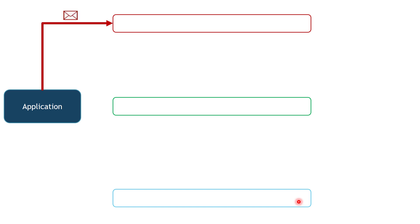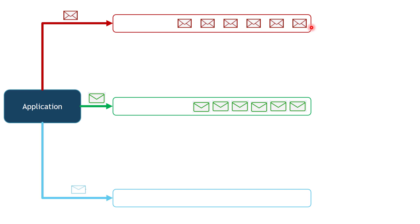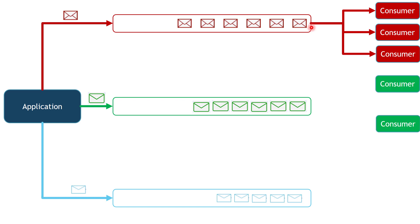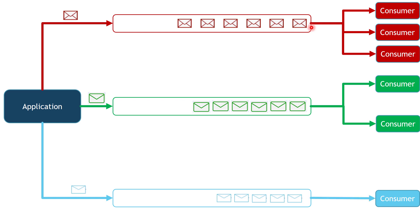You can then have one or more consumers to process messages from the high priority queue, fewer consumers for the medium priority queue, and one consumer for the low priority queue. Based on this approach, we have resolved the challenge when a Message Queue provider doesn't support priority queues. However, you might be concerned about the number of consumers required — at a minimum, three consumers based on the number of queues in our architecture.